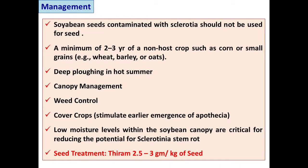For management of Rhizoctonia blight in soybean, use disease-free seed — soybean seeds contaminated with sclerotia should not be used for sowing. Maintain a minimum two to three years rotation of non-host crops such as corn or small grains like wheat, barley, or oats. Deep summer plowing helps destroy sclerotia present in the soil through the sun's heat. Seed treatment with fungicides like thiram or captan or carbendazim at the rate of 2.5 to 3 grams per kg of seed is also recommended.